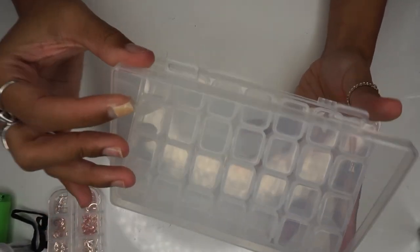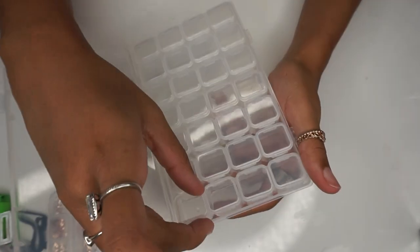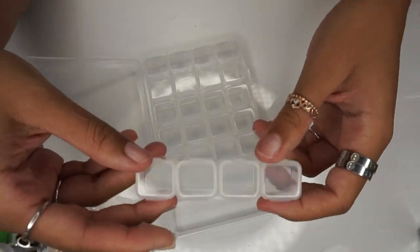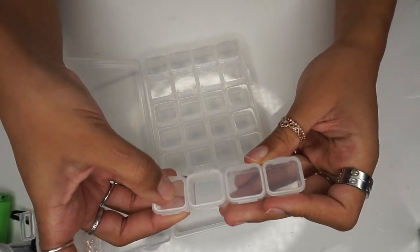Next is this 28 piece detachable storage box. They come in rows of four and these are nice if you have a lot of different nail art designs and want to keep it all in one place.